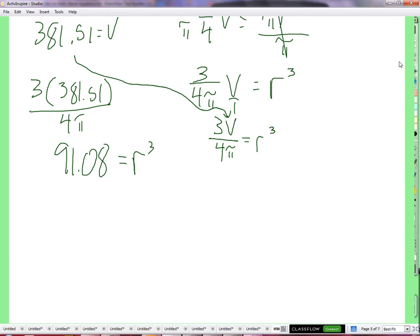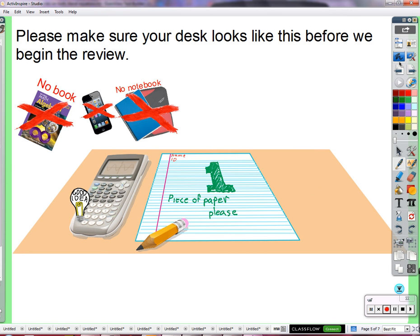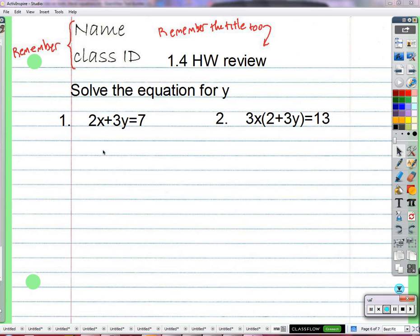If you did well and you're getting it. We're going to solve for y. So if someone helps us out with that, we'll solve for y. Subtract 2x. 2x plus 3y equals 7. Subtract 2x. 3y equals 7 minus 2x. Divide by 3. Y equals 7 minus 2x over 3. As long as what you wrote is equal to this, that's correct. Number 2, a tricky one.